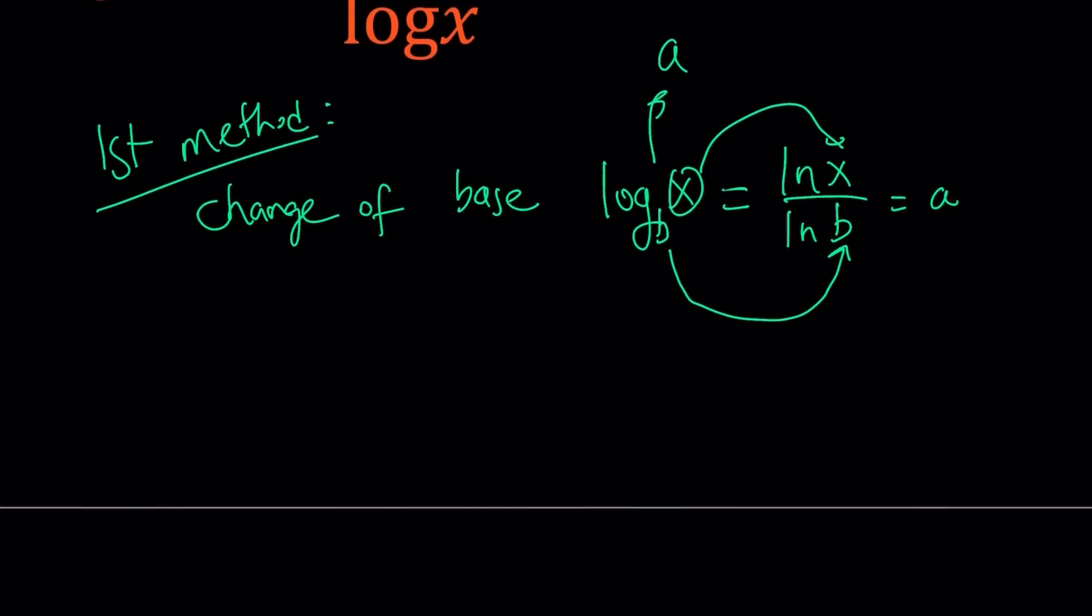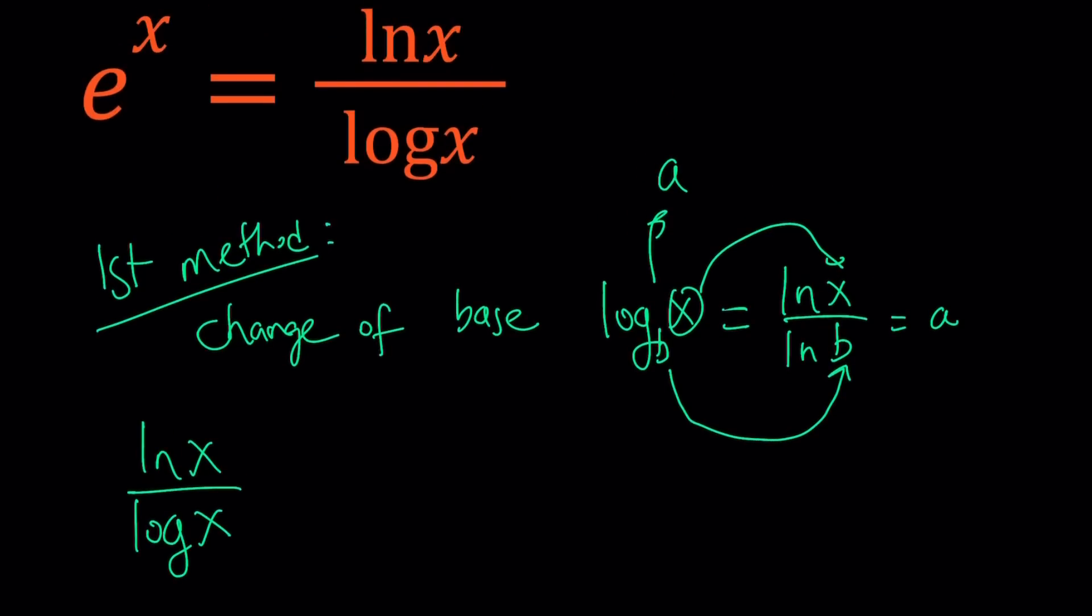So change of base is what we're going to use. Now we have ln x over log x and this should kind of call for change of base because I have the ratio of two logarithms. They have different bases, but their arguments are the same. What does argument mean? Well, the argument is the x. Great.